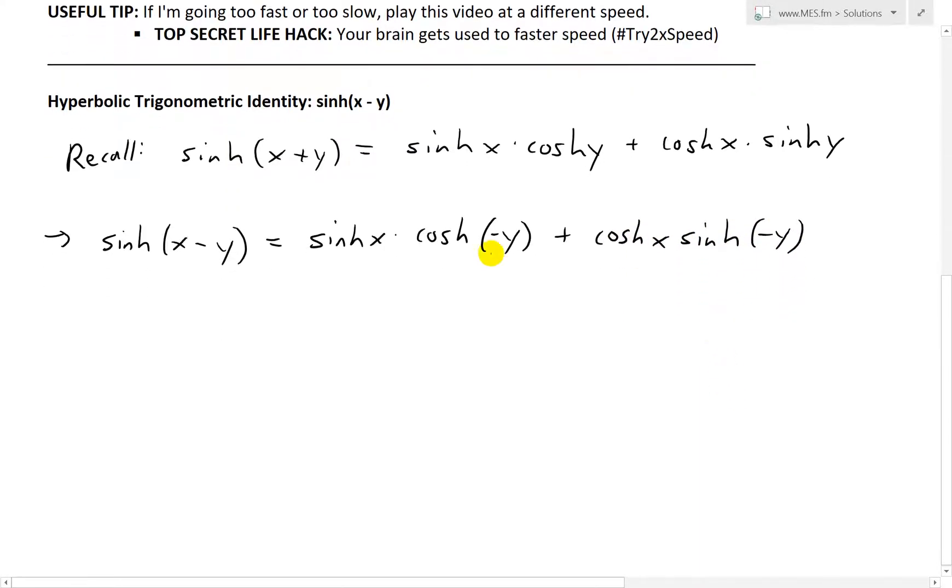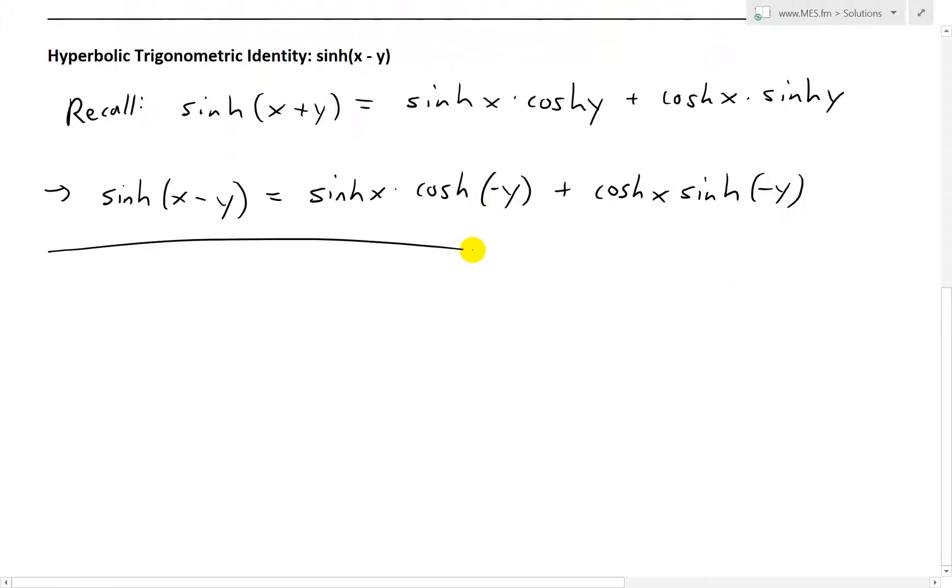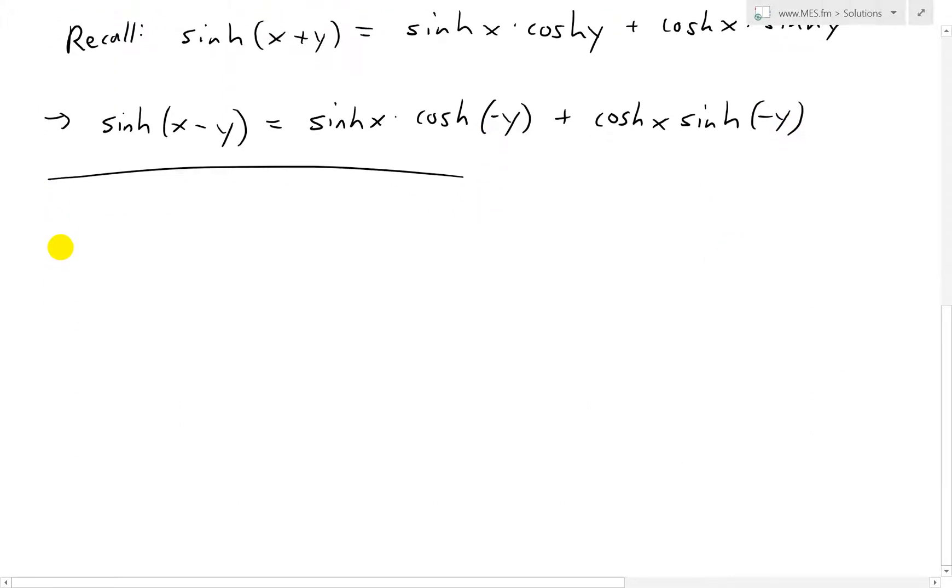And now what we have is this negative y and there's a negative y in there. So we're going to use the trig or hyperbolic trigonometric identities for cosh and sinh. Or we'll just derive those all in one go like this. And I'll write a note.